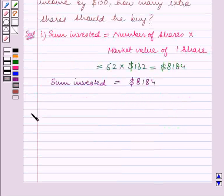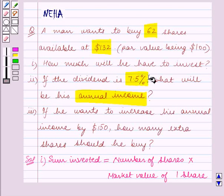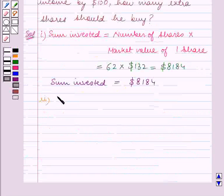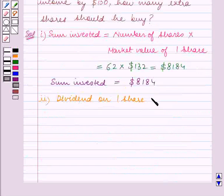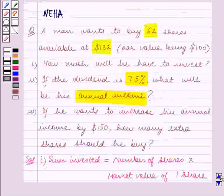Now for part 2, we have to find his annual income and we are given that the dividend is 7.5%. First, we will find the dividend on 1 share. This is equal to 7.5% of the par value, which is given to be $100.